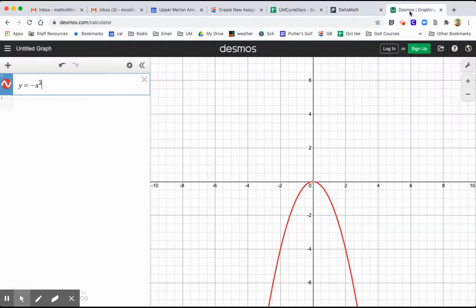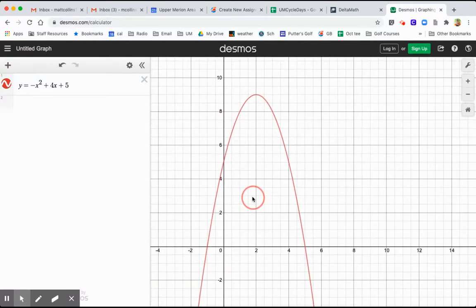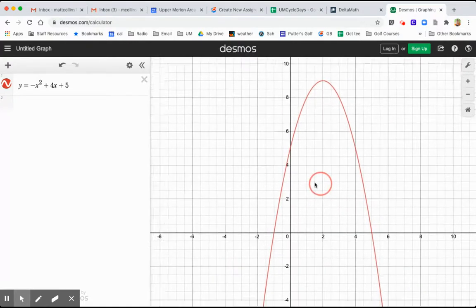I think it was plus 4x plus 5. There it is, yeah. Plus 4x plus 5. And you can see the negative in front that inverts my parabola. It gives me a maximum. You can kind of drag and drop this so you can kind of see a little bit better what's going on. So you can always manipulate your screen.